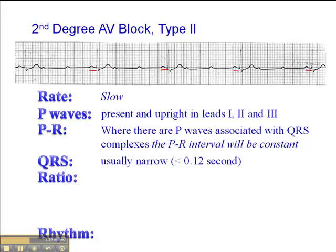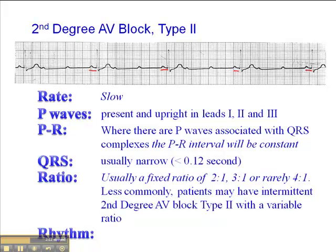The QRS is typically narrow. The ratio is usually a fixed ratio of 2 to 1, 3 to 1, and rarely 4 to 1. Less commonly, patients may have intermittent second-degree AV block type 2 with a variable ratio — patients who have a stretch of sinus rhythm, then a 2 to 1 block, sinus rhythm, then maybe a 3 to 1 block, and then some sinus rhythm followed by another block.